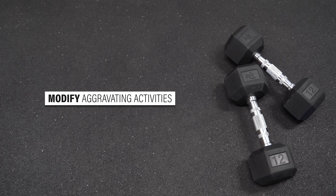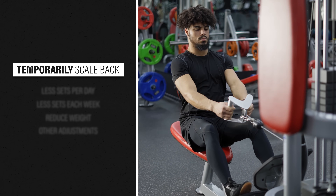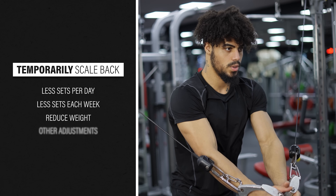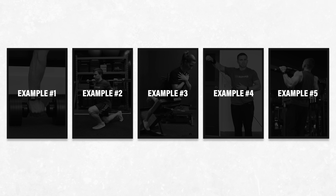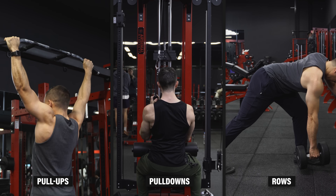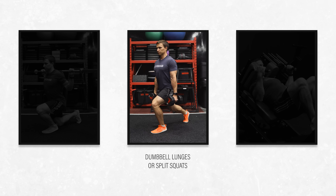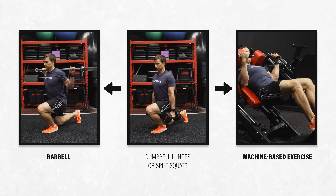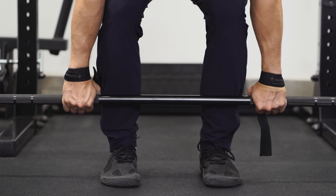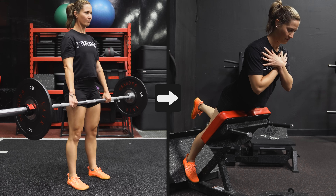My first recommendation for rehab is to modify aggravating activities. If you're a gym goer who can't tolerate your current training program, you need to temporarily scale back by doing less sets per day or throughout the entire week, reducing the amount of weight you're lifting, or making other adjustments to your routine. If upper body exercises that require significant gripping, like pull-ups, pull-downs, and rows are provocative, an easy modification is to use lifting straps. If leg exercises with weights in your hands are uncomfortable, like dumbbell lunges or split squats, use lifting straps, try a barbell, or perform a machine-based exercise instead. If heavy deadlift variations are problematic even with lifting straps, pick a different leg exercise that trains similar muscle groups without placing any demand on your grip, such as single leg hip extension on a Roman chair.